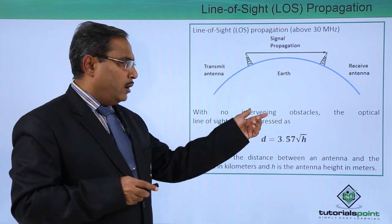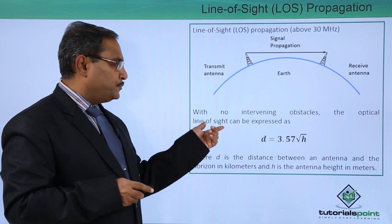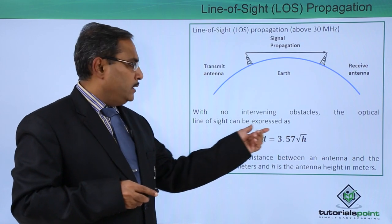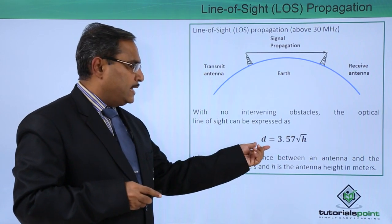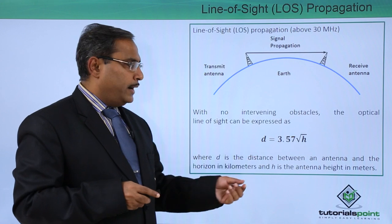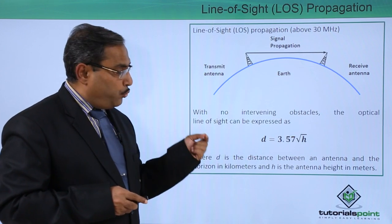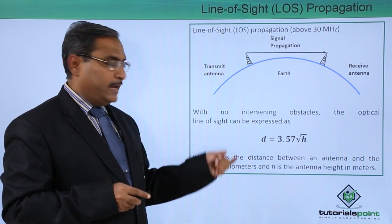They are in the line of sight and here this signal propagation is being done. With no intervening obstacles, the optical line of sight can be expressed as D is equal to 3.57 square root of H. What is D and what is H?